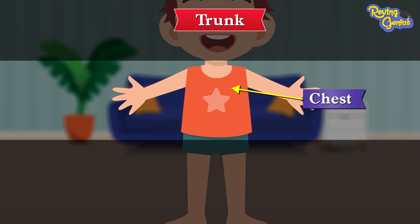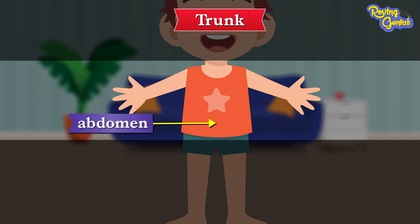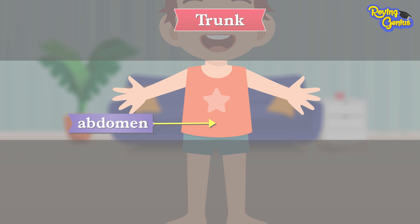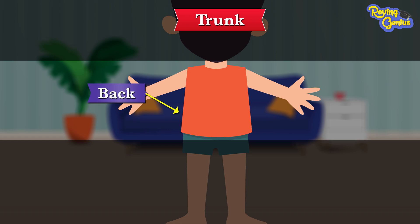Our chest is that part of our trunk that goes up when we breathe with our nose. Our abdomen is in the middle of our trunk and helps in stabilizing the body. It also protects the internal organs.